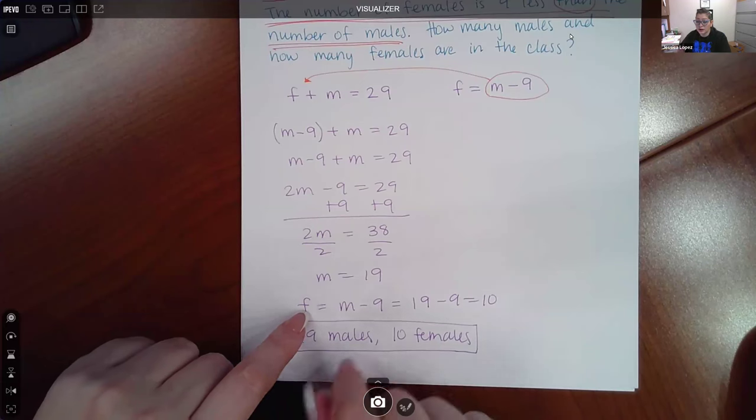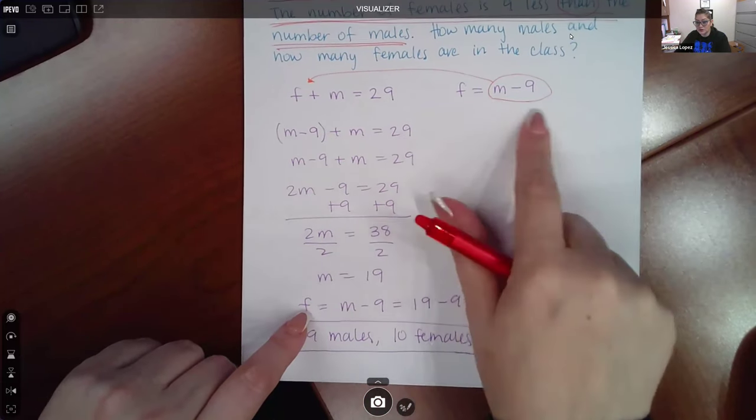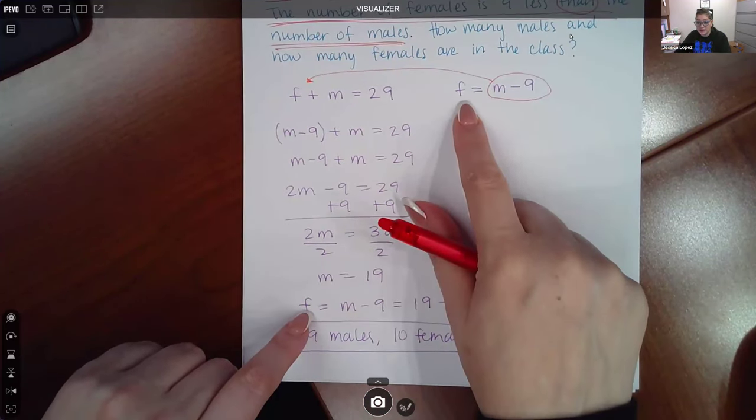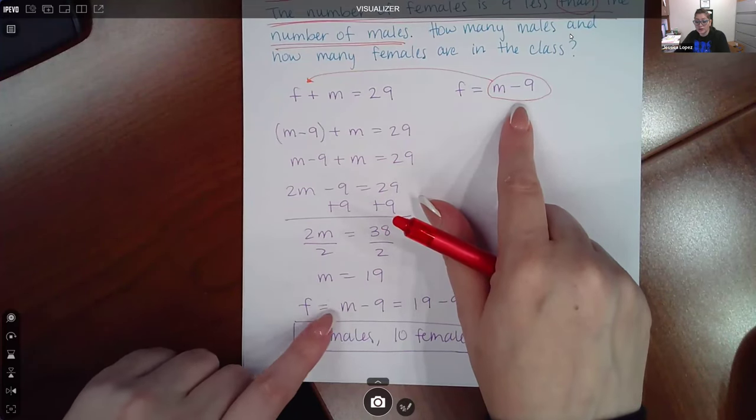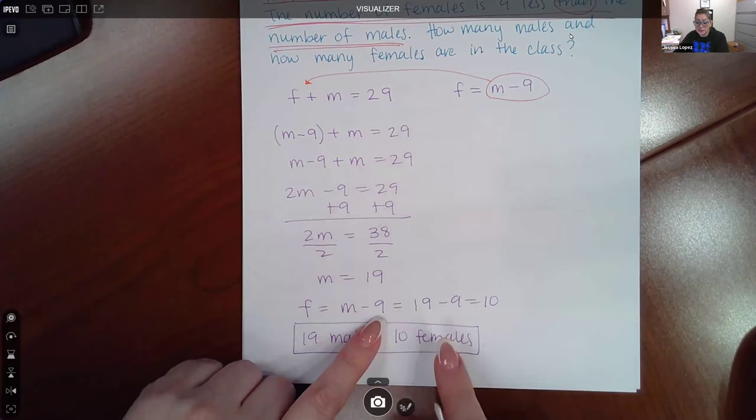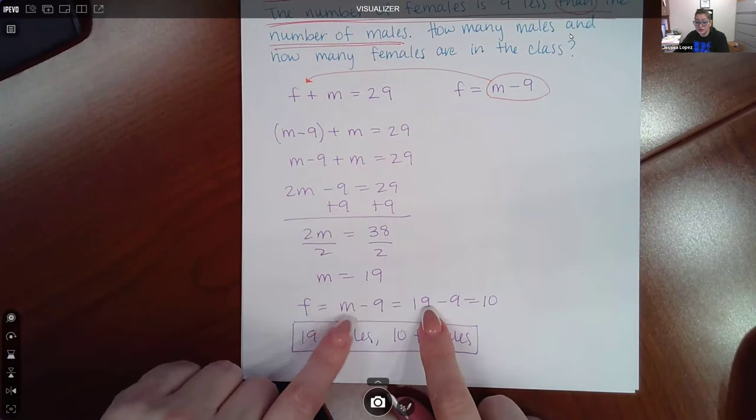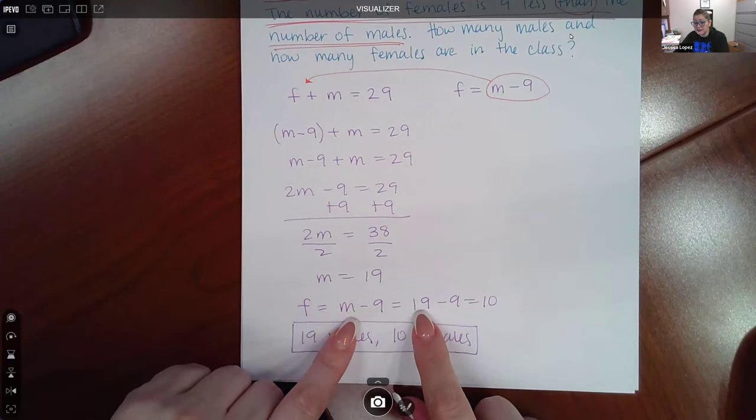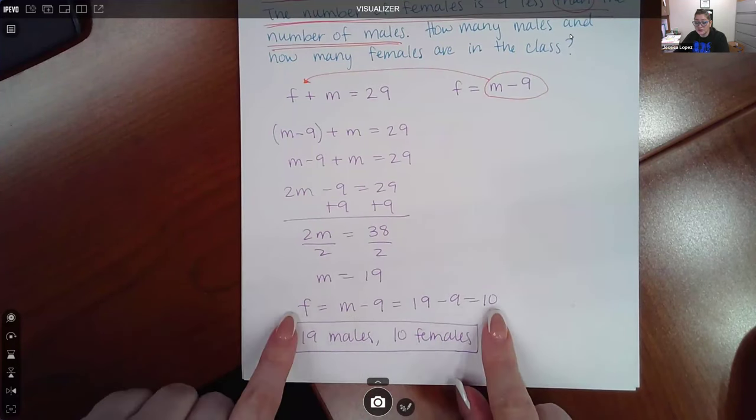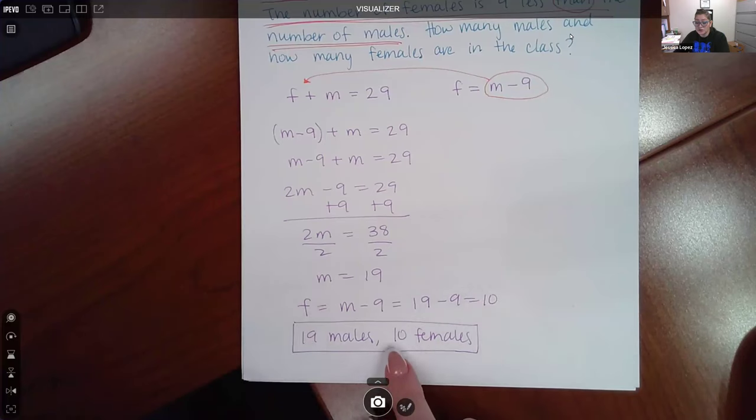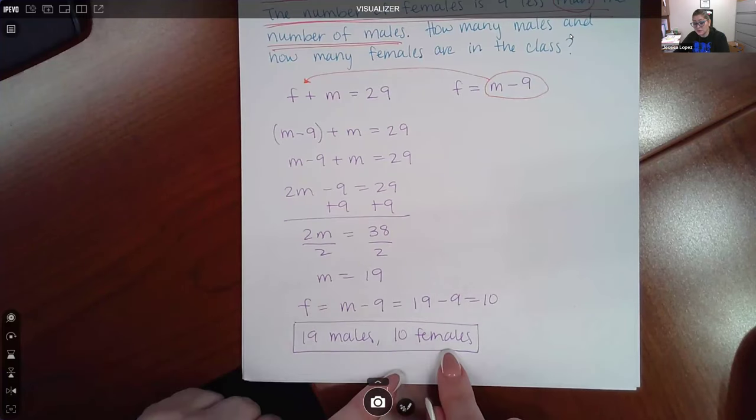Now if you want to figure out how many females, remember this equation already had the females isolated. So you can take that equation F equal to M minus 9 and just plug in the M value that you found. So the M gets replaced by 19 and then 19 minus 9 equals 10. So this means that there are 10 females. 19 males, 10 females.